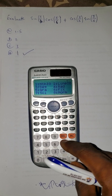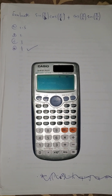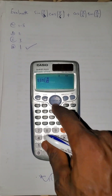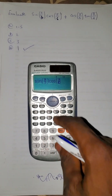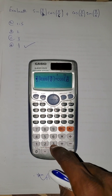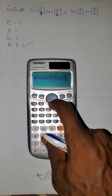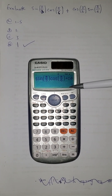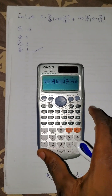For the second method, press shift mode then press 4 to take your calculator to radian mode. Once in radian, you can use π directly on the calculator. Press sin(π/3) multiplied by cos(π/6), then plus cos(π/3) multiplied by sin(π/6). Press equals — the answer is 1. That's how to evaluate it using the calculator.